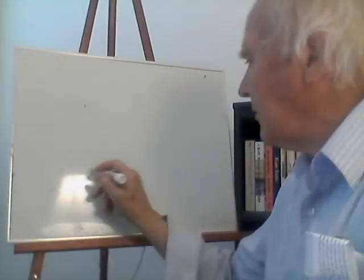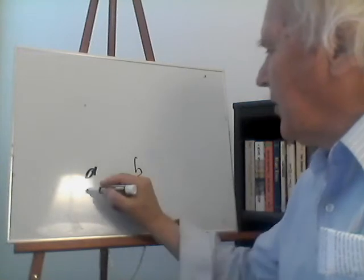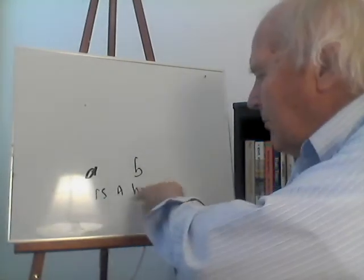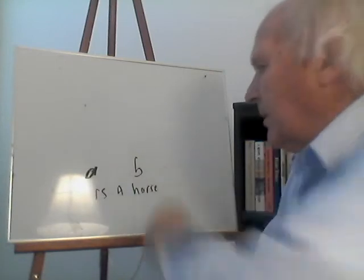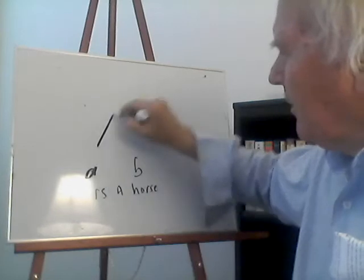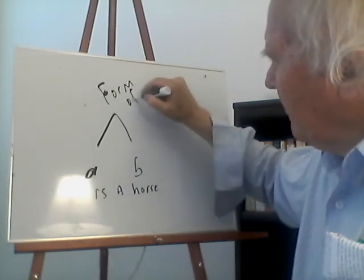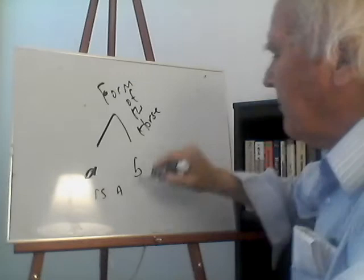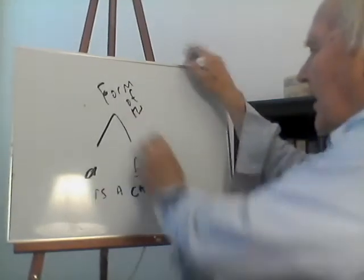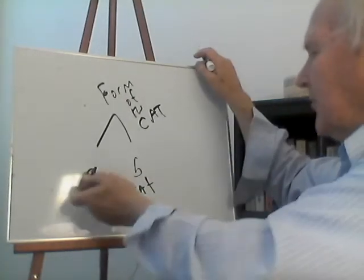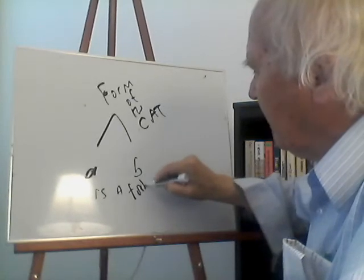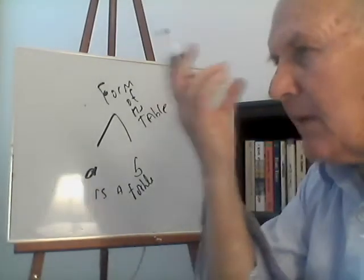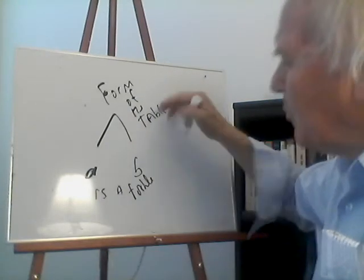If there are two horses, call them A and B — A and B stand for names. A is a horse and B is a horse. When two things are the same, when you can predicate horse of two things, A and B, Plato would say that you can do that because they participate in the form of the horse. Similarly, if A is a cat and B is a cat, the reason A and B are cats is because they participate in the form of the cat. And the same thing for a table: A is a table, B is a table — they participate in the form of the table. That means there is some table you cannot actually see. It's an abstract idea, but it's more real than particulars. The form for Plato is more real than particulars.